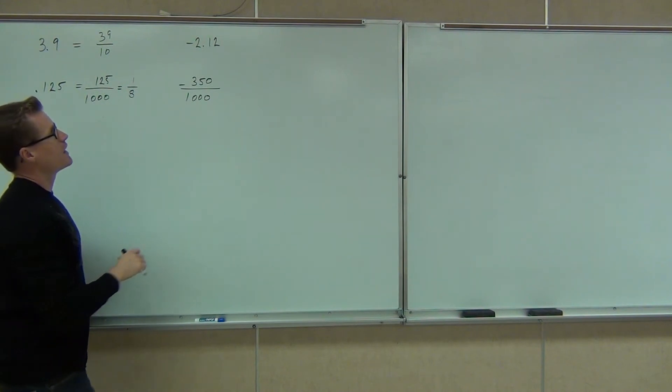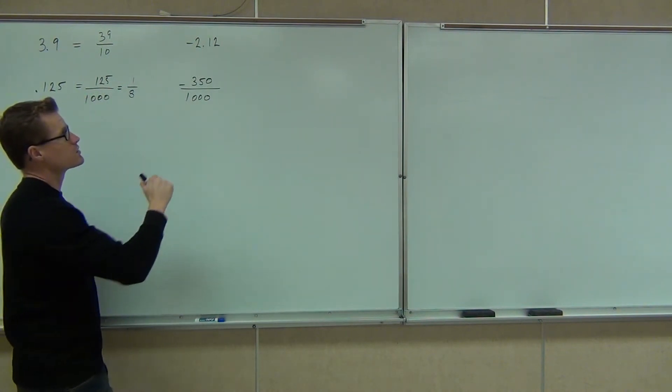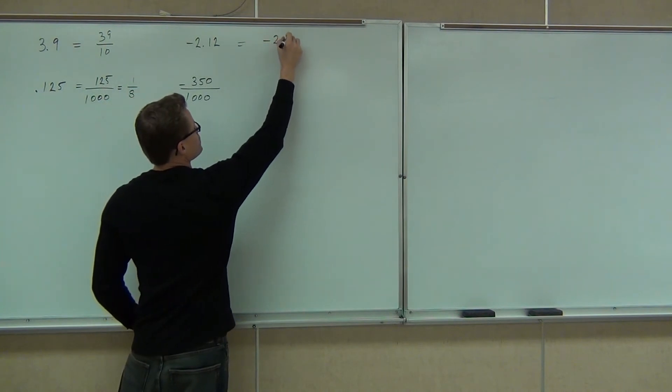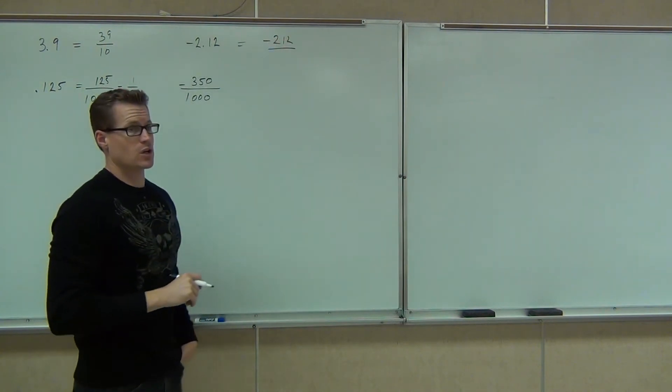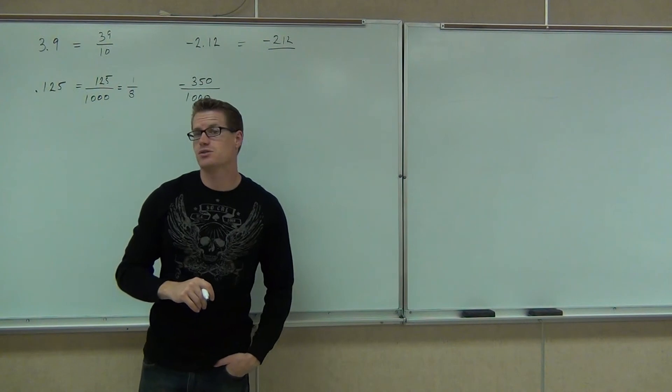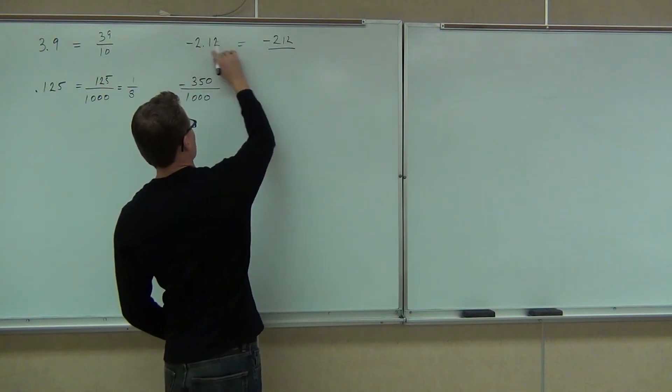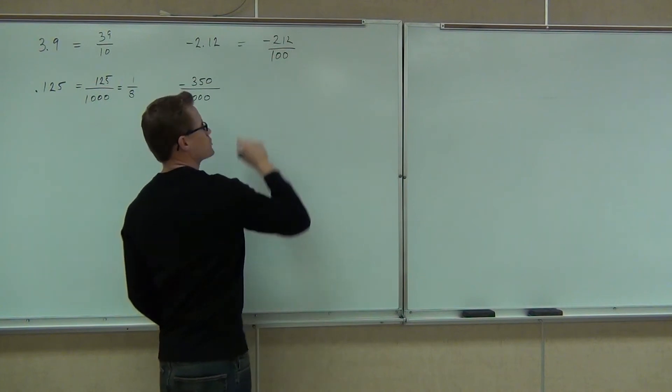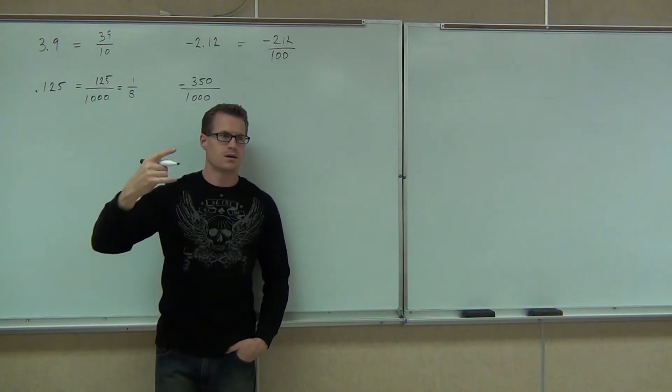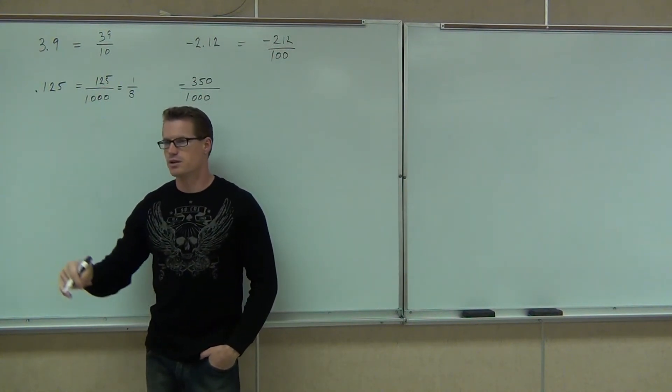Next up, we've got negative 2.12. We need to get negative 212. Negative 212 is over 10, over 100, or over 1,000. What do you think? How much? 100. Because you only move decimal two spots. It ends in the hundredths. You should have it over 100.